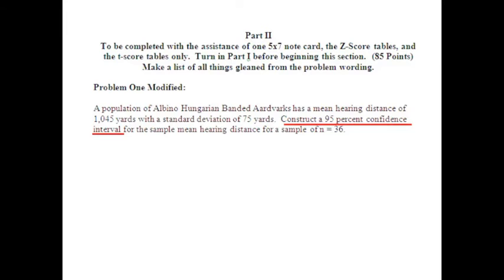Let's suppose for a moment that problem one on that sample test had been worded as follows: A population of albino-Hungarian banded aardvarks has a mean hearing distance of 1,045 yards with a standard deviation of 75 yards. Construct a 95% confidence interval for the sample mean hearing distance for a sample of n equals 36.